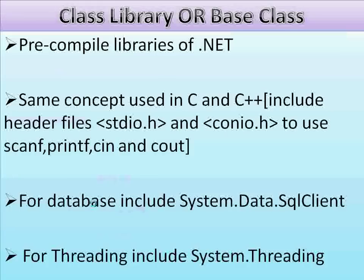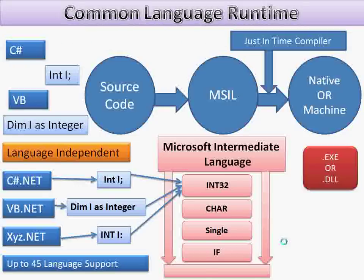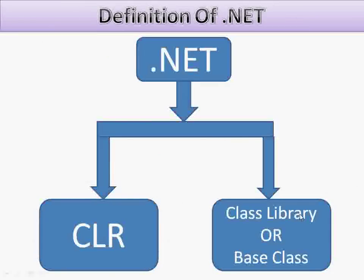The second part of .NET is class library or base classes - these are pre-compiled libraries of .NET. Just like in C and C++ you include header files like stdio.h and conio.h to use functions like cin, cout, scanf, printf, the same concept applies here. If you want to use database access, import 'using System.Data.SqlClient'. For threading based applications, import 'using System.Threading'. So .NET is a combination of CLR and class library. CLR is the heart of the .NET framework - it provides a runtime environment, handles code execution. Class library provides supportive libraries to help you create applications.